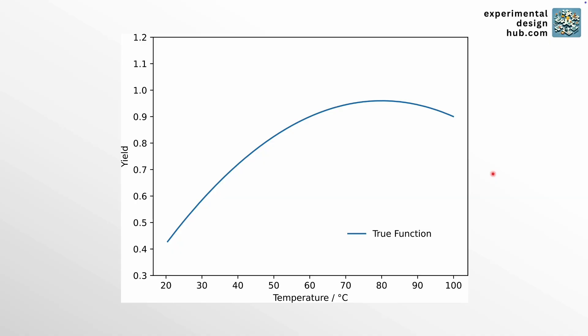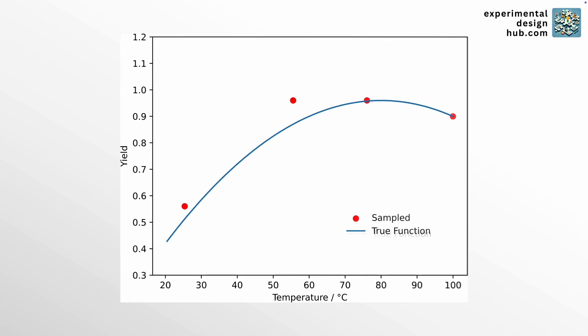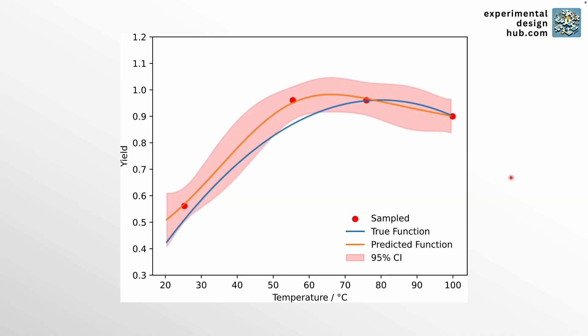For the Bayesian optimization part, I used the BoAx package in Python — I'll leave a link in the video description if you want to check it out. Based on the region of interest I defined here, from 20 to 100 degrees, the algorithm suggests a few initial experiments. Those initial samples are chosen randomly or through sampling methods and are not yet the machine learning part. That comes after we run those initial samples and train the model to predict the yield, as shown in this plot. The model's predictions are illustrated by the orange line, and you can also see the uncertainty around it.